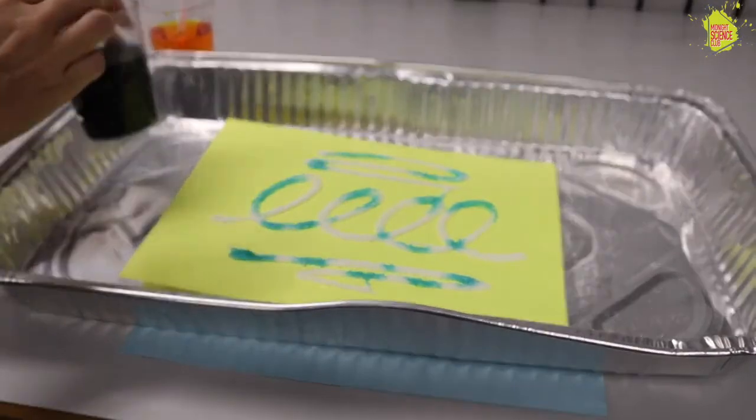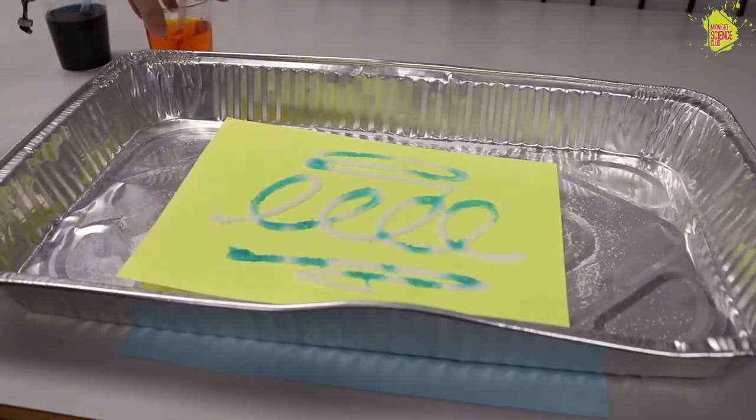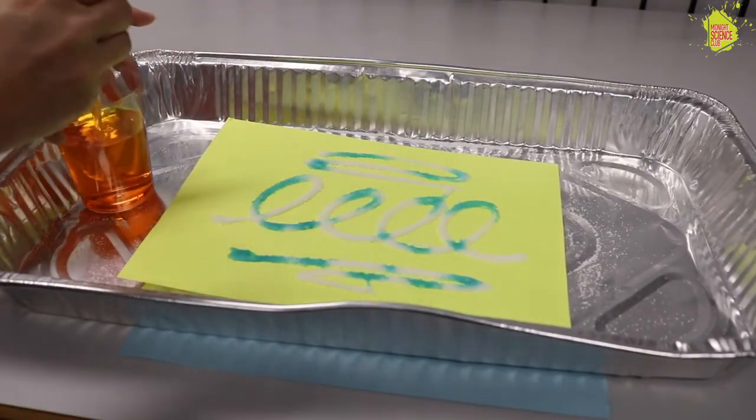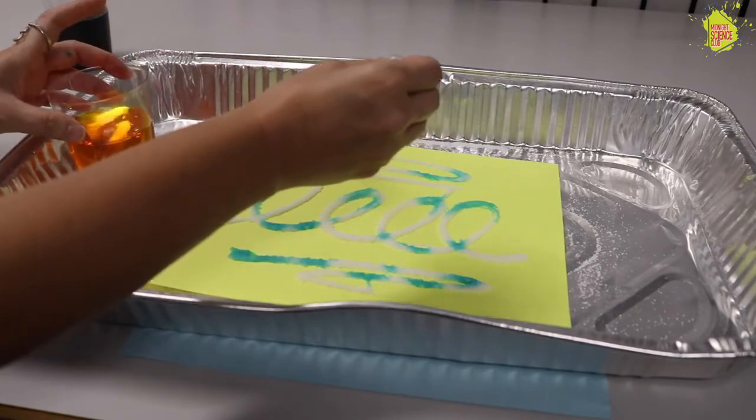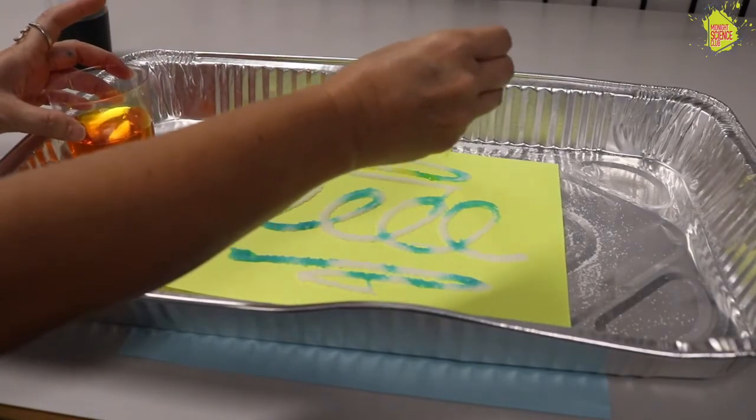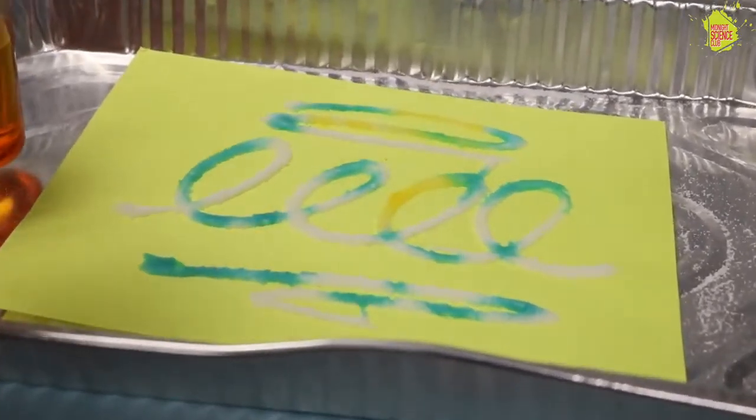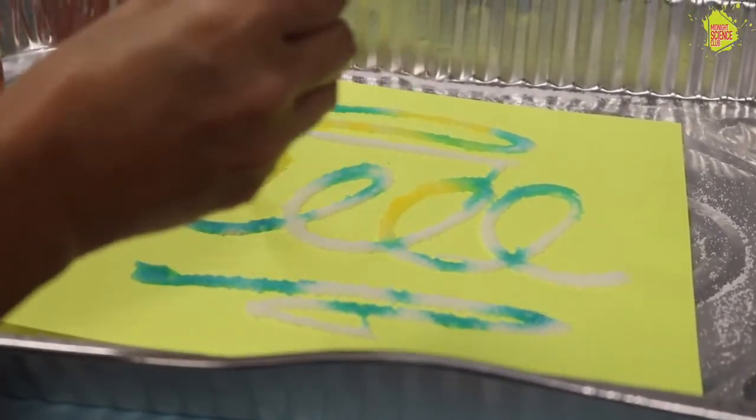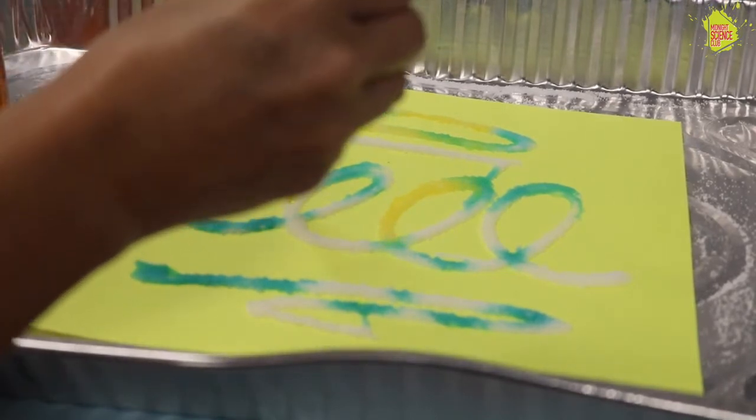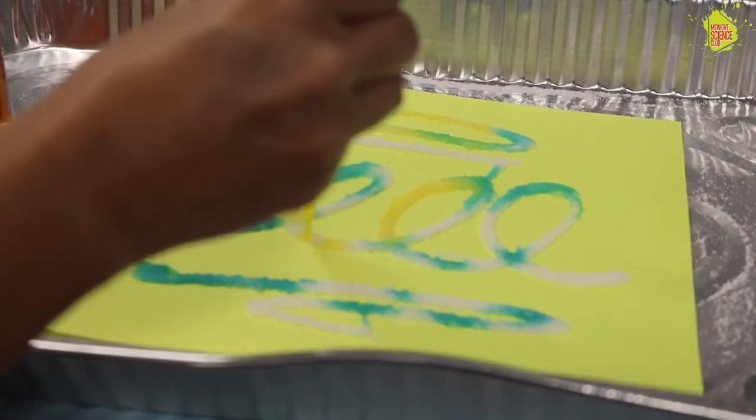Then since I have yellow, let's go ahead and put some yellow. Again, just take a couple drops. You can also put it on the blue too. Blue and yellow makes green. You can definitely keep some white spots too.